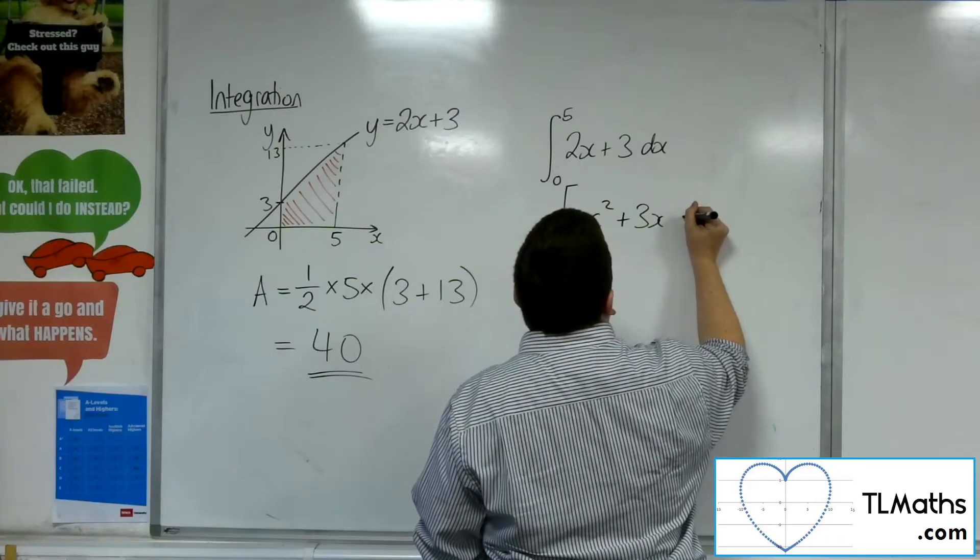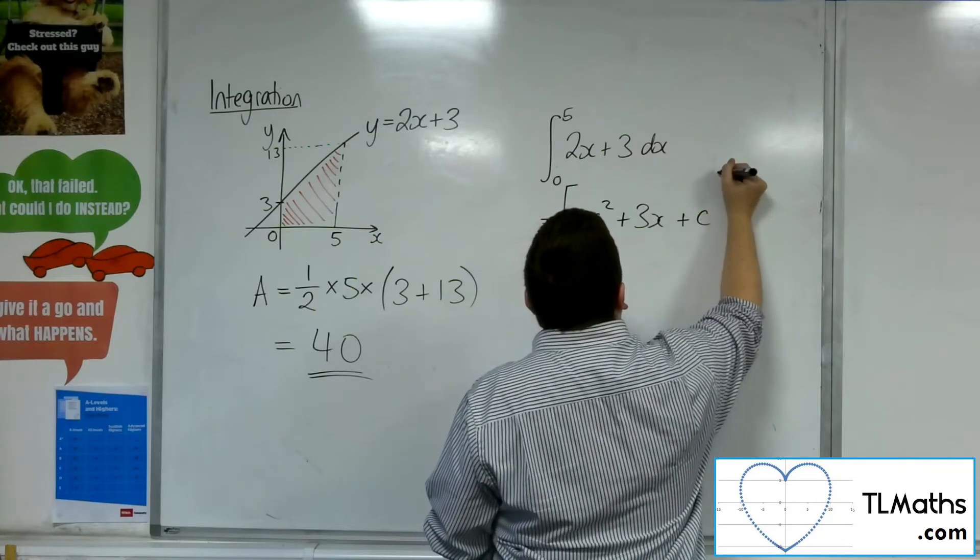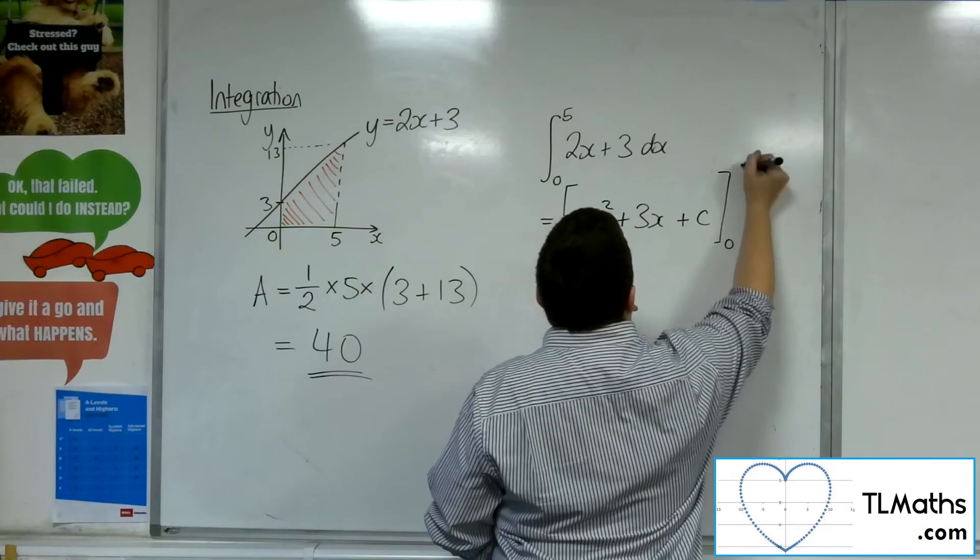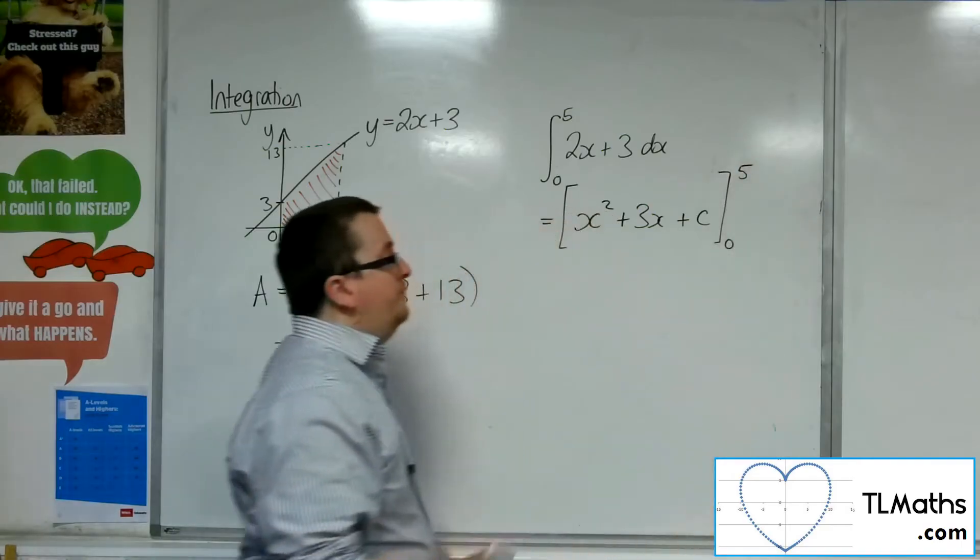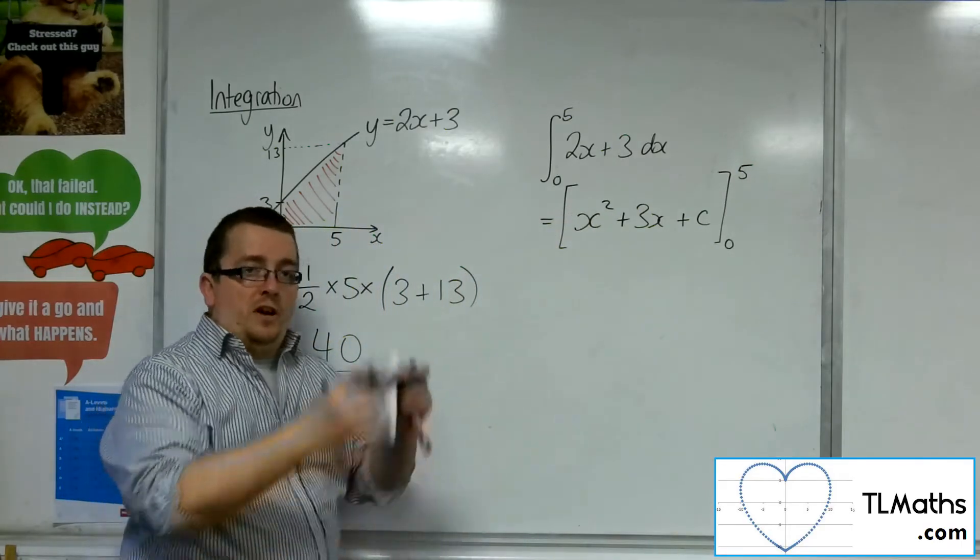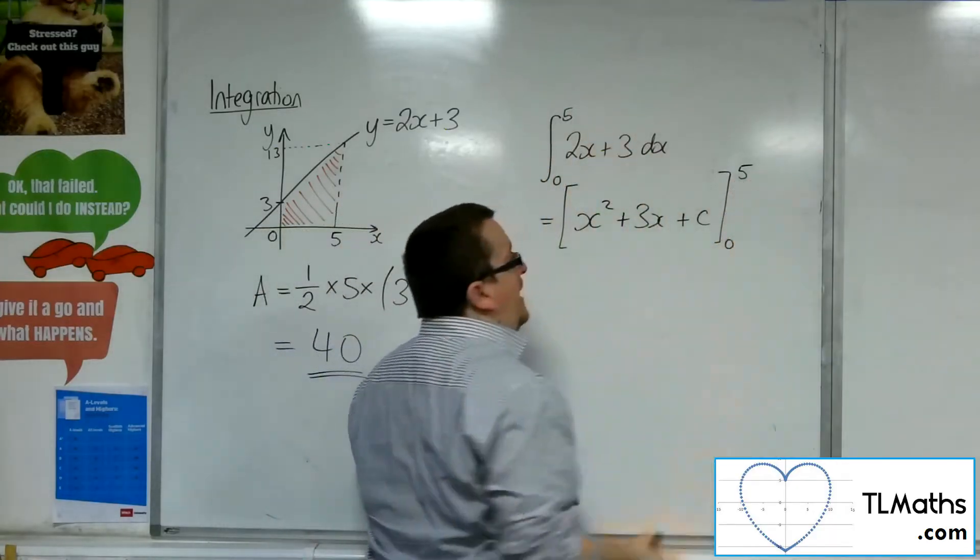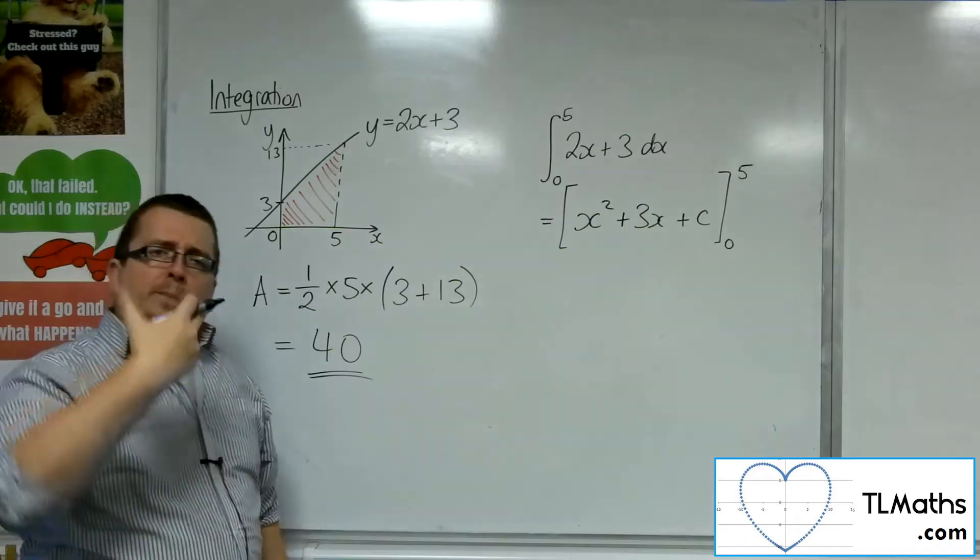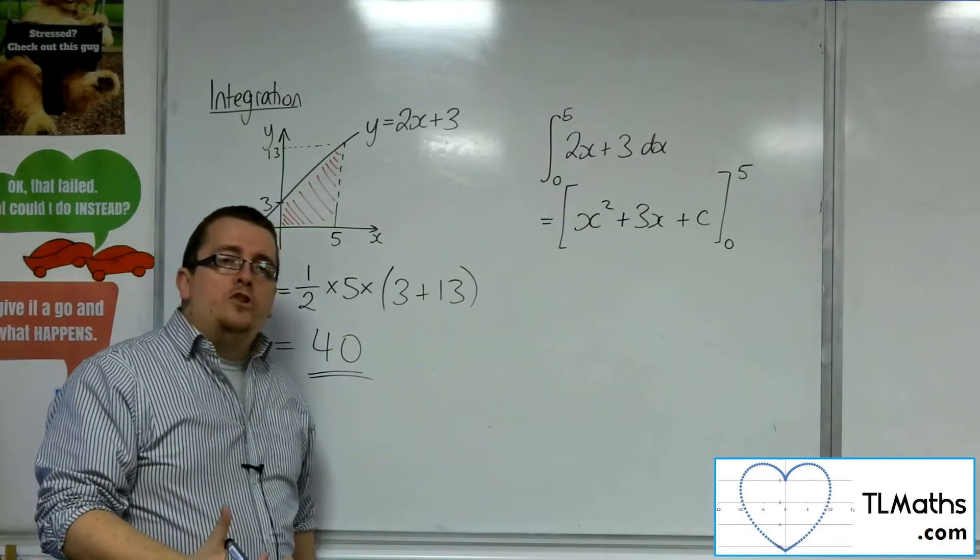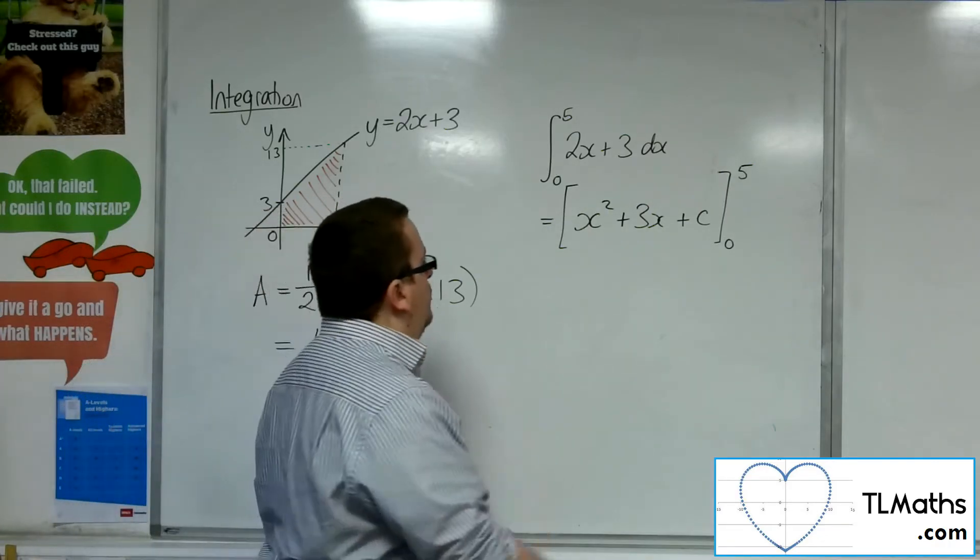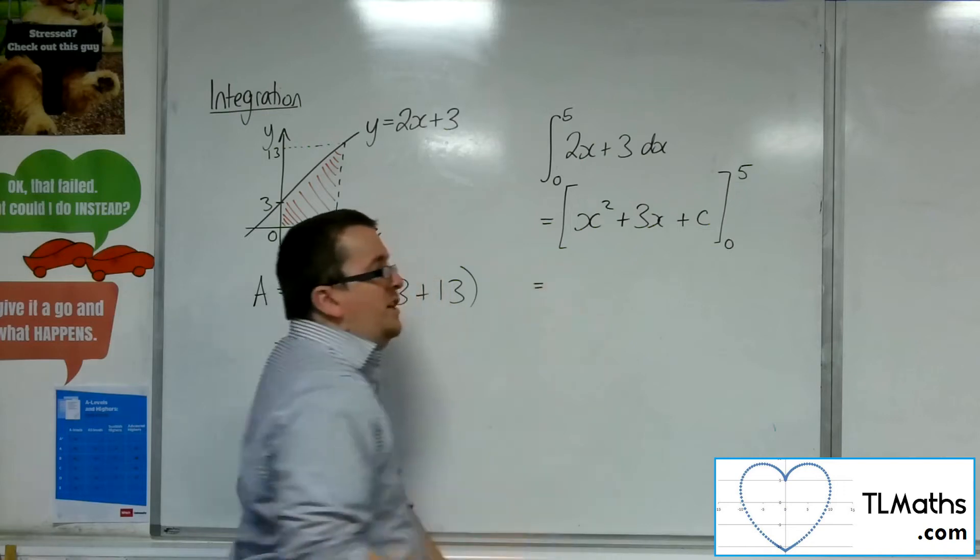Now you might be thinking, well, usually we put in a plus c constant of integration there. So let's do that, and I'll show you what happens. And we're going to put our integral into square brackets, and now the limits appear on the right-hand side. It's a very specific way of writing down your answer, but it makes sure that you're keeping track of what you need to do next.